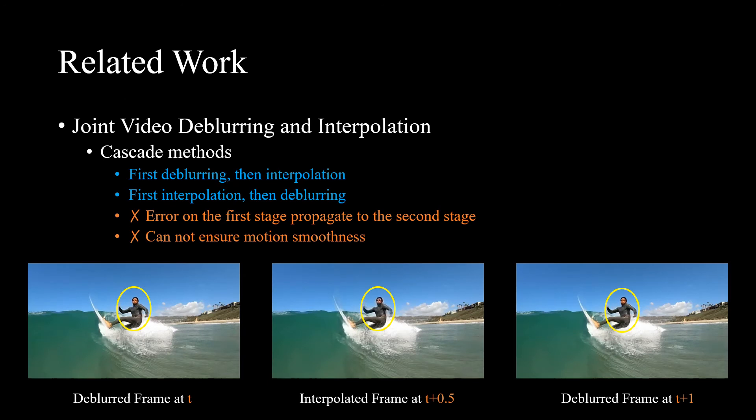The cascaded model is a simple solution for joint interpolation and deblurring. But the pixel errors introduced in the first stage will be propagated to the second stage, thus degrading the overall performance. Additionally, the cascaded model cannot ensure motion smoothness between the interpolated image and the deblurred image.